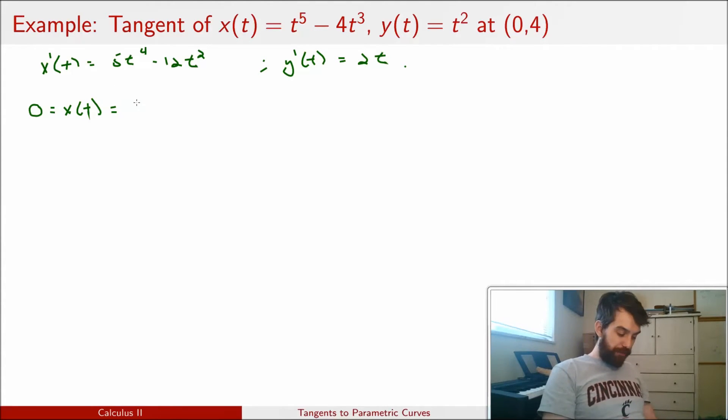And my expression, I'm going to factor out a few copies of t here. So this is going to be t cubed times t squared minus 4. And that is going to imply that t is equal to 0 as a possibility for sure. But also t equal to 2 as a possibility and t equal to minus 2 as a possibility. So just plugging in the x-coordinate, it leaves a bunch of different values of t that could be the case that would all give the same x-coordinate.